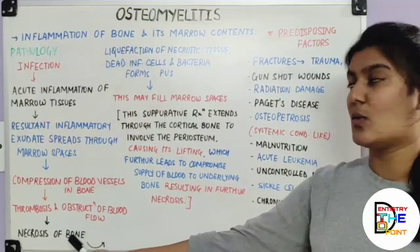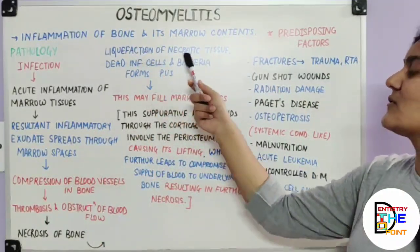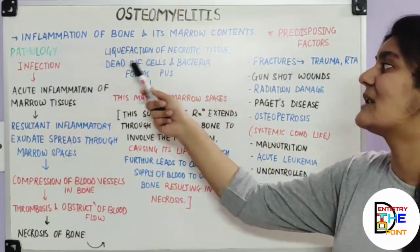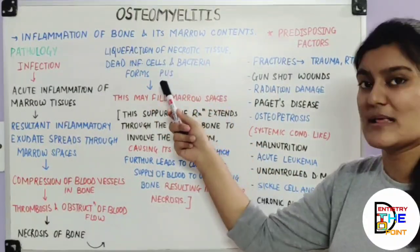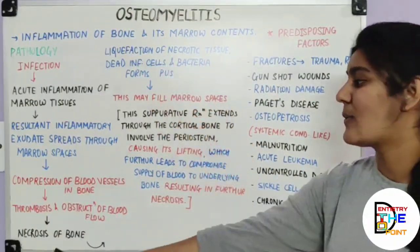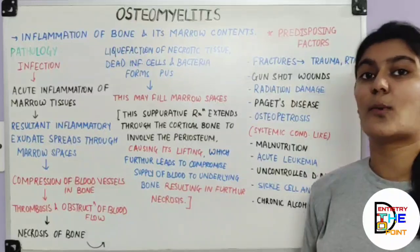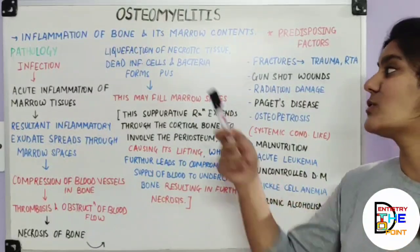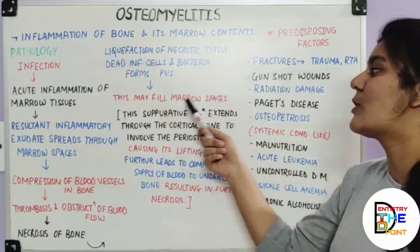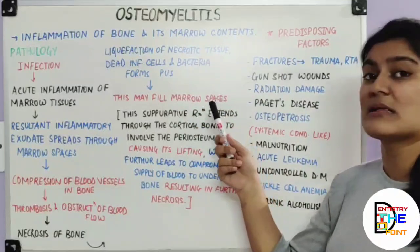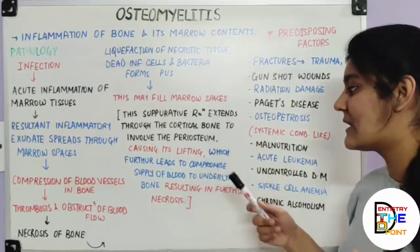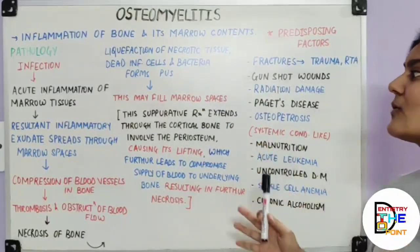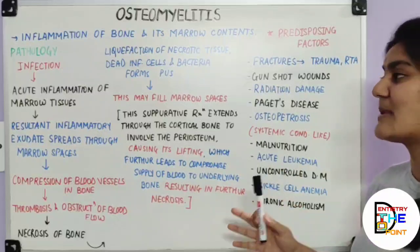Following necrosis, liquefaction of necrotic tissues, dead inflammatory cells, and bacteria form pus. This pus may fill the marrow spaces, resulting in further necrosis of the bone.